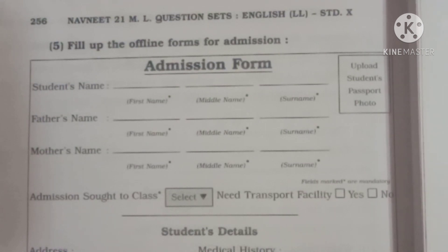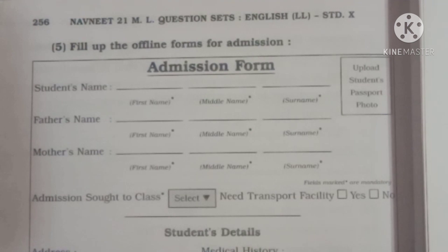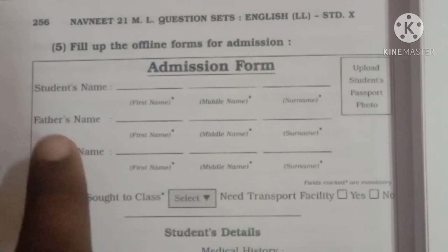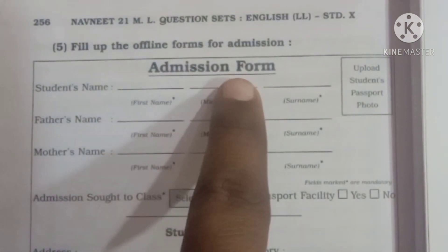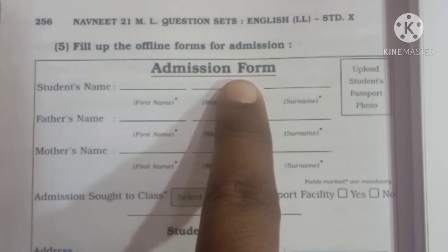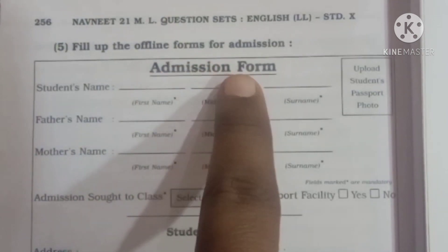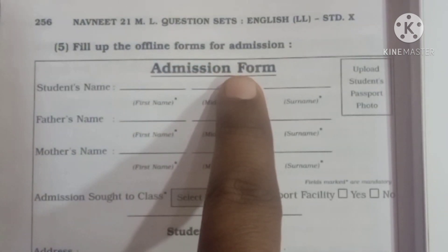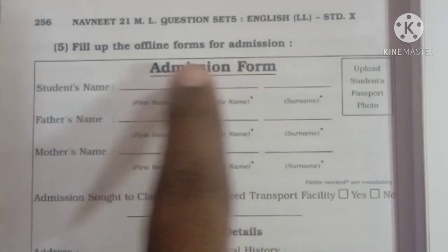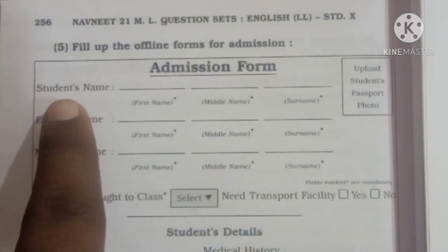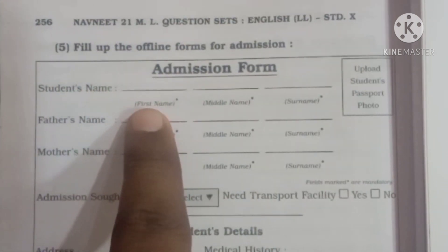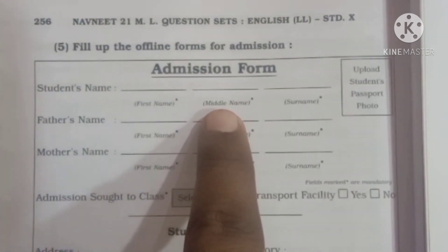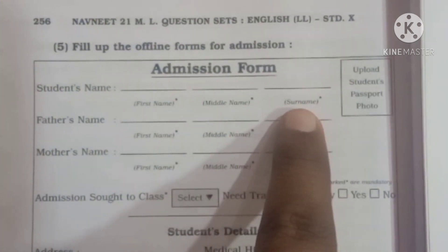Now look, a form is here. It's an admission form — praveshacha form ahi ha. So what is required to be filled up here? Student's name: first name, middle name, surname.